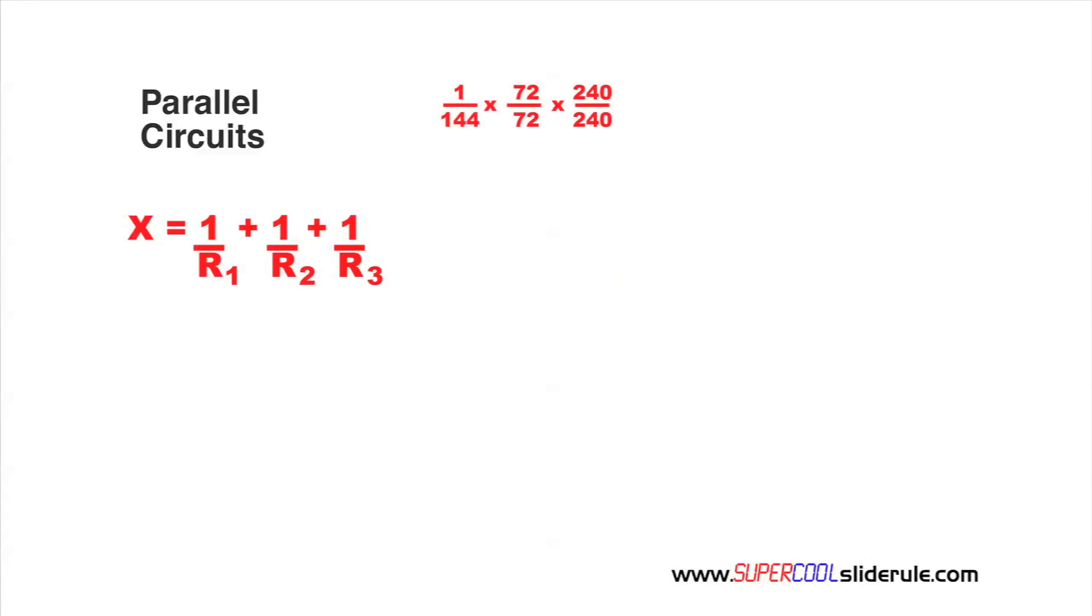So, we're going to take 144 multiplied by 72 over 72 multiplied by 240 over 240. Now, remember, when we multiply anything this way, we're actually just multiplying by 1. So, the value of our fraction really hasn't changed.